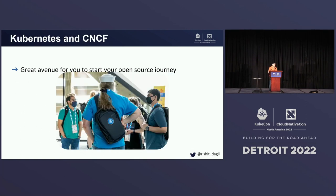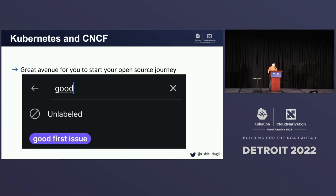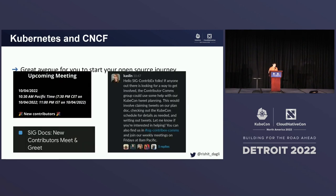I want to talk about Kubernetes and CNCF being a great avenue for you to start your open source journey. Not just because of the good first issues — there are many good first issues, and if you are a new contributor, give it a try — but also because of great new contributor activities by the Kubernetes and CNCF team. This is one of the meetings where new contributors were highlighted, asked to share their experiences and what they are coming into the community with. Some other images show meet and greet for new contributors and how they can get involved. These are some pretty bold initiatives for the Kubernetes and CNCF ecosystem, which allows you to get into the project or make your first step into open source, making Kubernetes and CNCF a great place to do that.